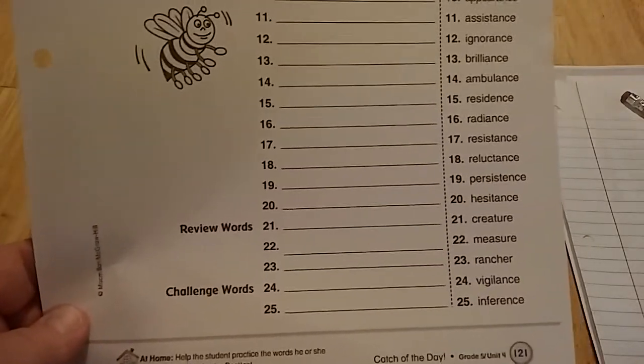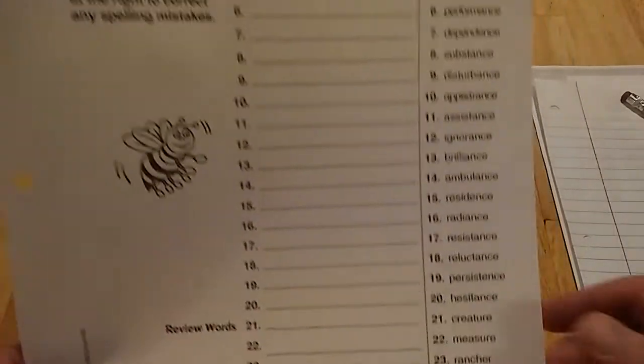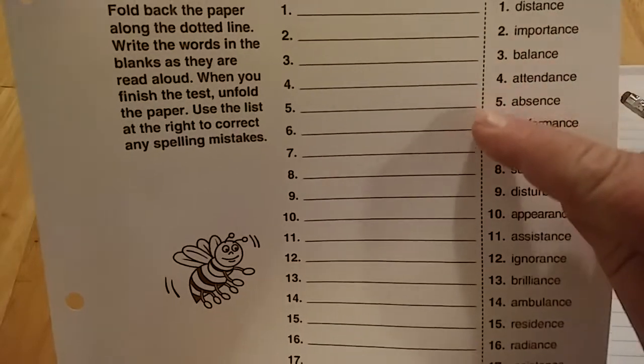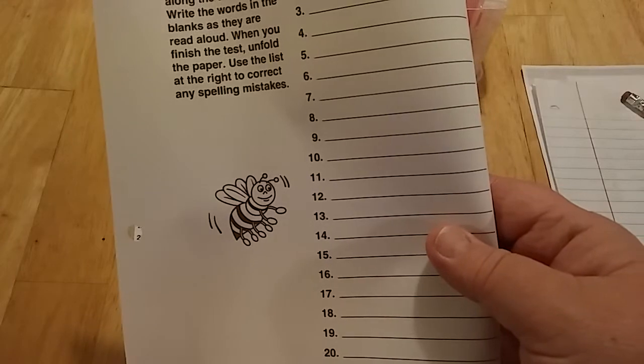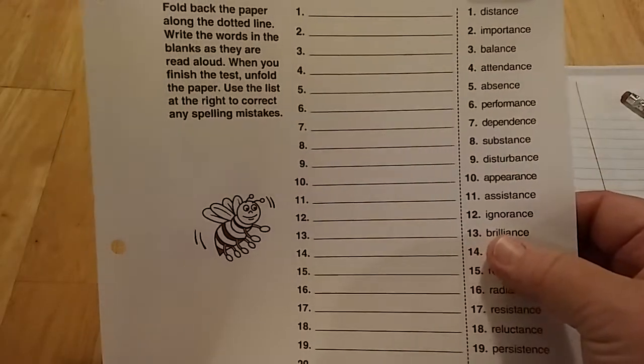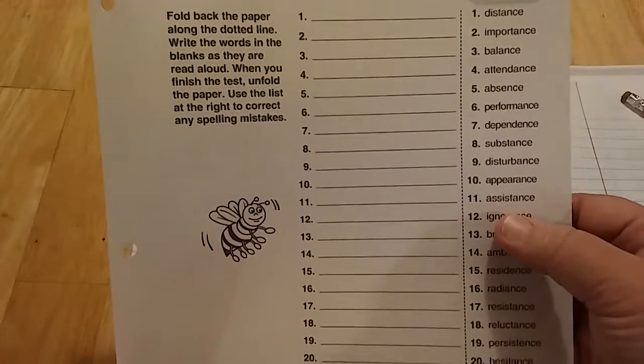So what they have is a section here where the child could fold this back and you read the words to them, and then they can open it up and see the correct spelling if you'd like. However, that's not how we do it.